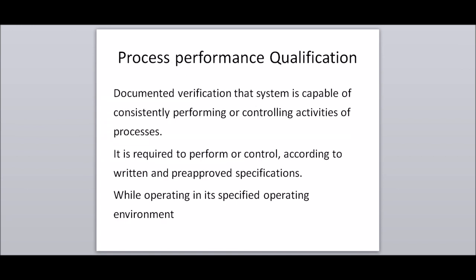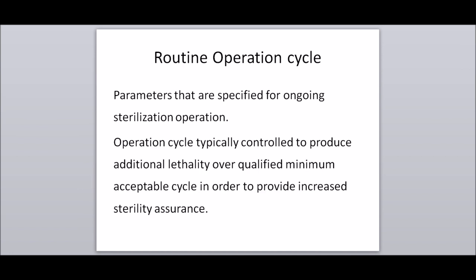Process performance qualification: documented verification that a system is capable of consistently performing or controlling the activities of the processes, according to written and pre-approved specifications while operating in its specified environment. Routine operation cycle: the parameters specified for ongoing sterilization operation, typically controlled to produce additional lethality over the qualified minimum acceptable cycle, in order to provide increased sterility assurance.